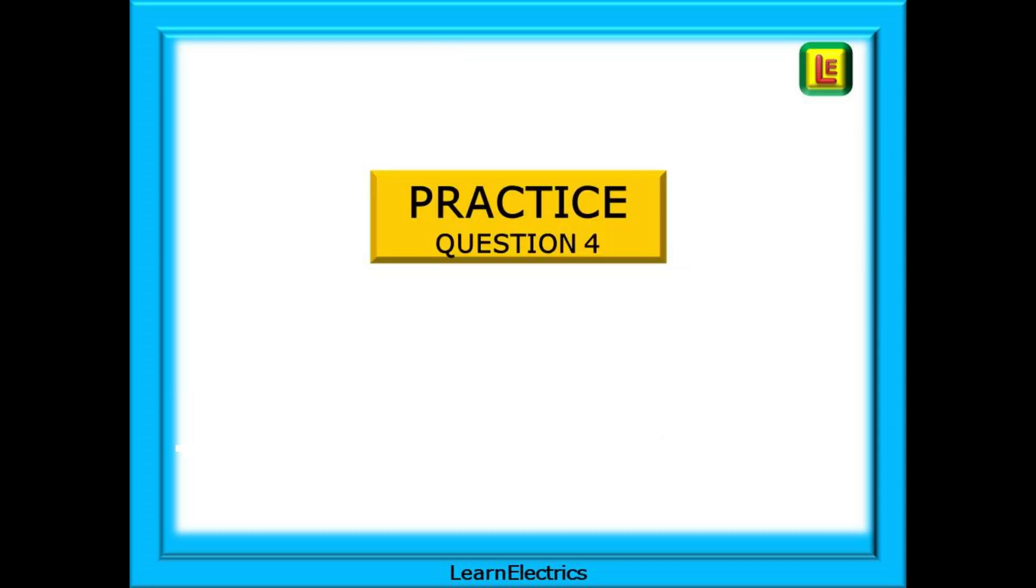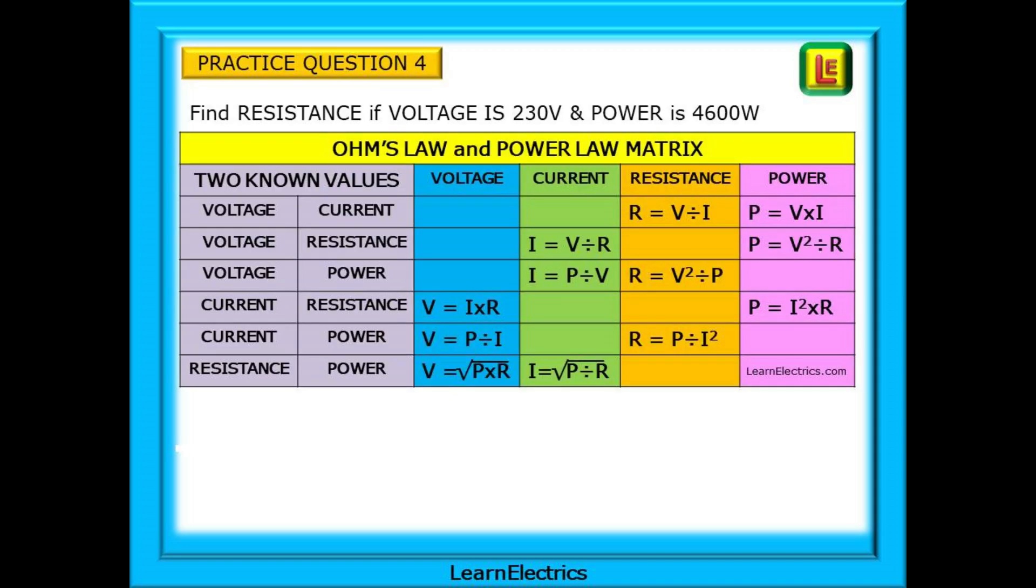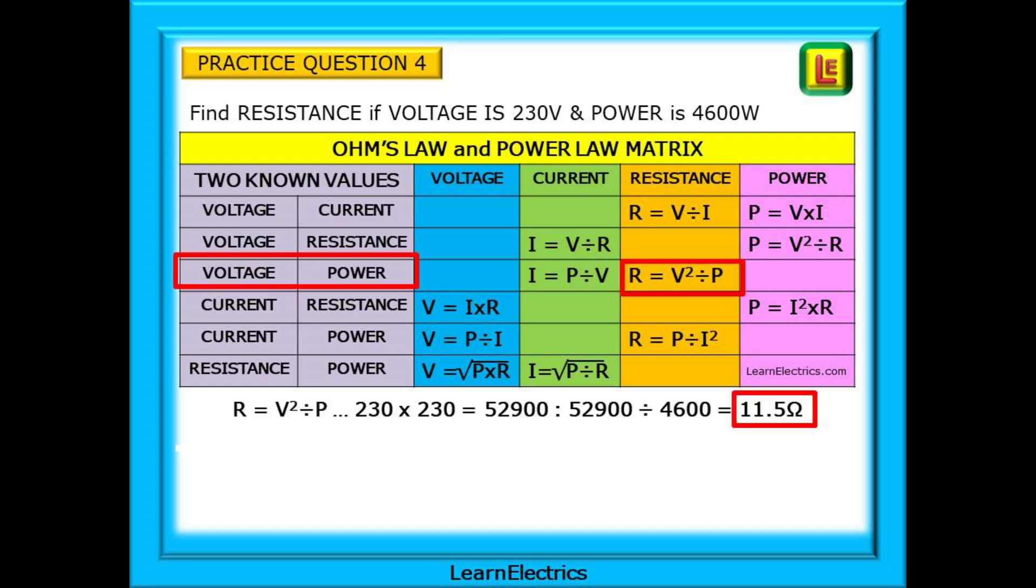And finally, question number four. Find the resistance if the voltage is 230 volts and the power is 4600 watts. Pause and calculate again. Your answer should be as shown below the matrix. If not, pause and check.